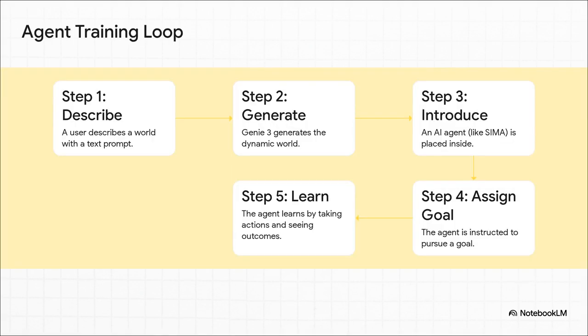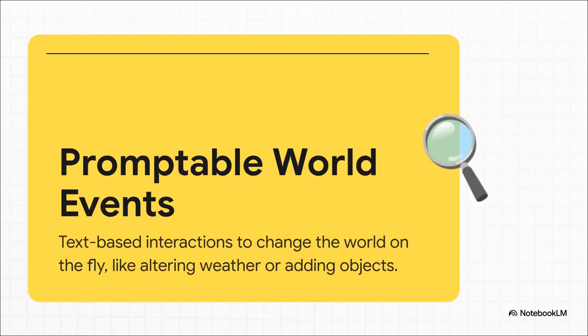That training process is pretty simple but incredibly powerful. A researcher describes a world, Genie builds it, they drop an AI agent inside, give it a goal — like 'find the red key' — and then the agent learns by trying things out, by failing, by succeeding, all inside this safe, simulated sandbox. There's also another layer of interaction: you can actually change the world with new prompts while the simulation is still running. So you could tell the world to make it rain, or have a tree fall and block the agent's path. This lets researchers create all these dynamic what-if scenarios to really test how an agent handles surprises.